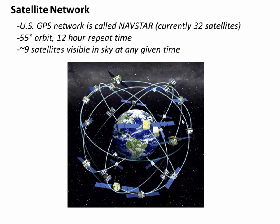GPS relies on a satellite network that is usually maintained by governments, including the U.S. government, which maintains the NAVSTAR network. This has 32 satellites currently in orbit — some of those are backups in case one breaks down. They have a 55 degree orbit and a roughly 12 hour repeat time, so at any given time on Earth you probably have roughly 9 NAVSTAR satellites visible in the sky.